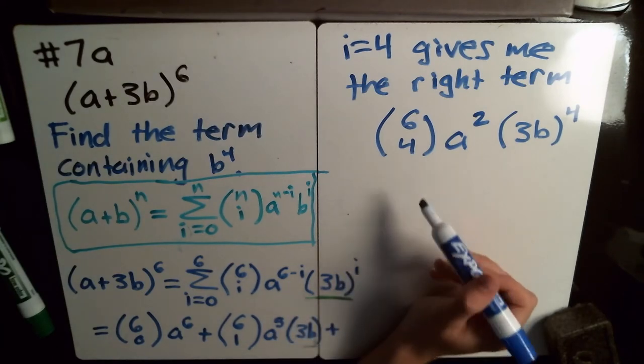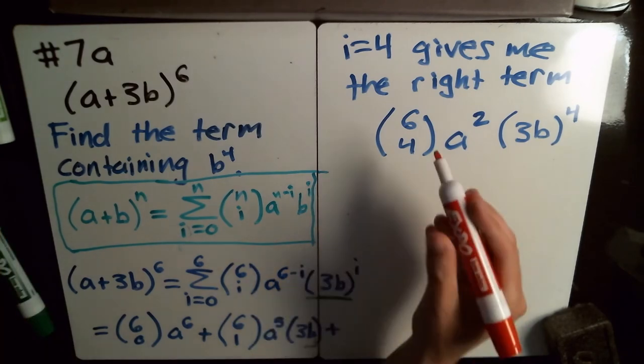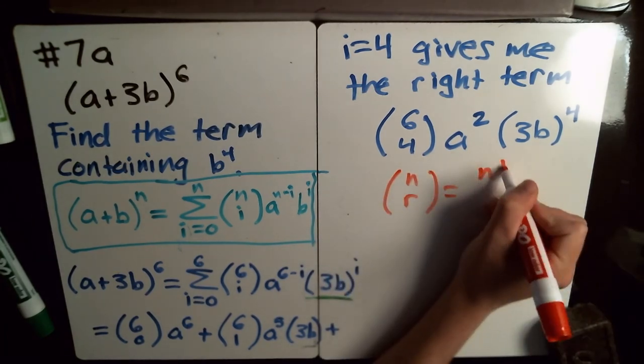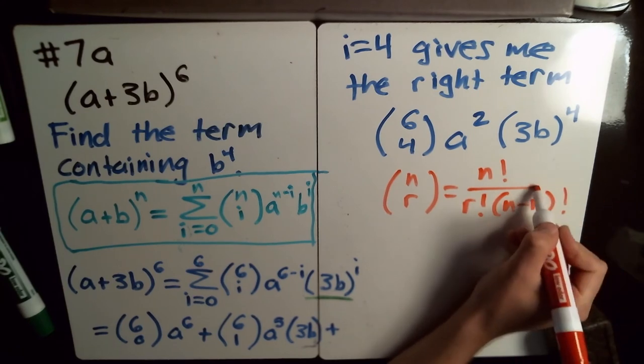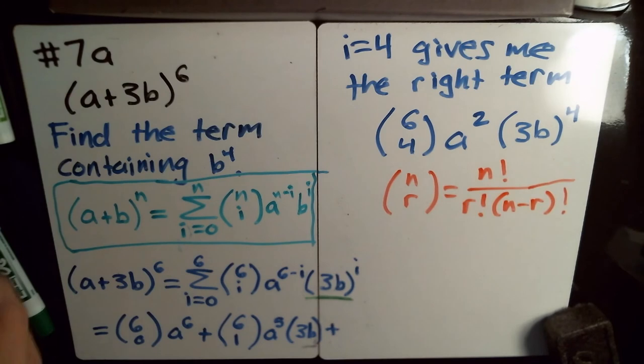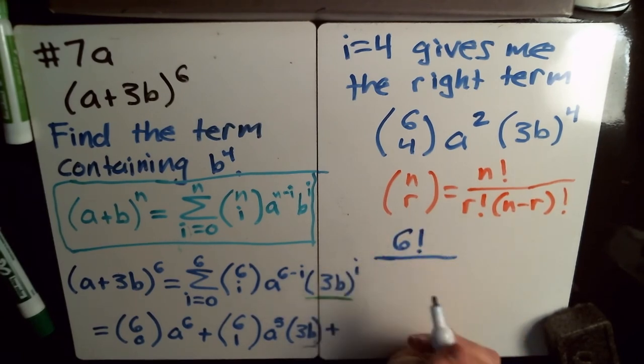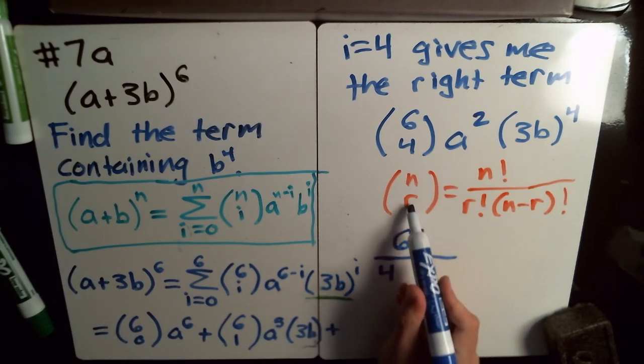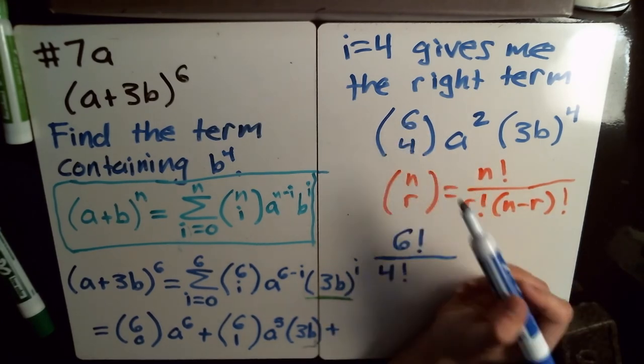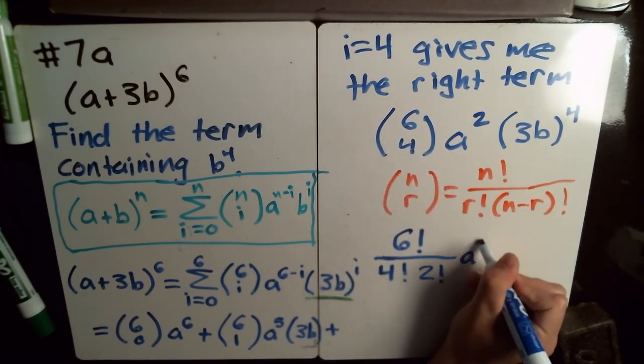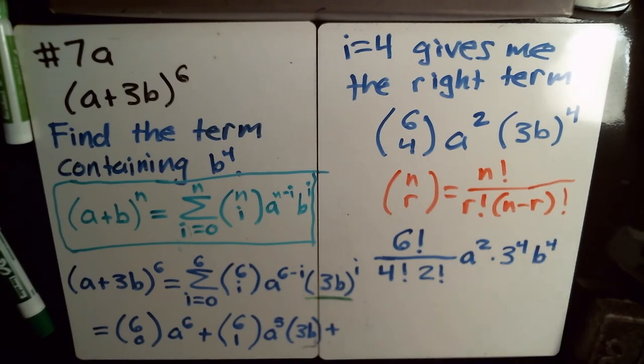And so now I just simplify this. And there's another formula that you'll have to use, which is that when you do n choose r, it's n factorial divided by r factorial times n minus r factorial. So in our case, 6 choose 4 is 6 factorial. And I'll explain what those exclamation points mean in a second. r is 4 because it's in the bottom. n minus r, so n is 6, r is 4, 6 minus 4 is 2, 2 factorial. So 1 factorial, a squared times, well, let's distribute in that 4th power on both things there.